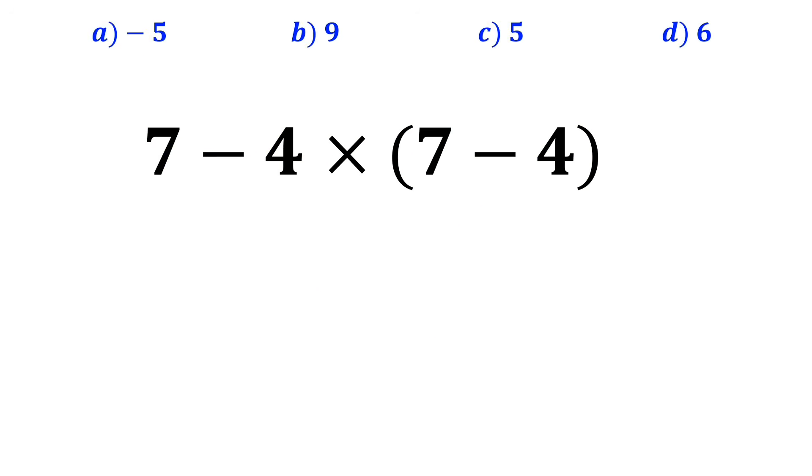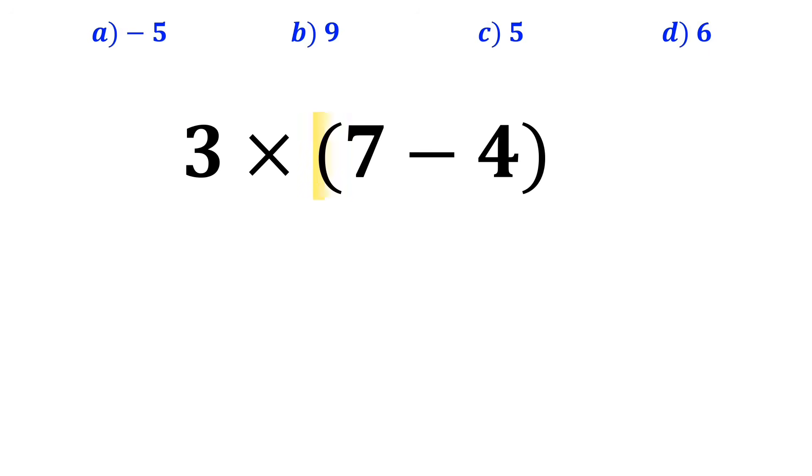In the first step, most people subtract 7 - 4 that I have highlighted in yellow. So it becomes 3 × (7 - 4). In the next step, they calculate 7 - 4 inside the parenthesis, which becomes 3 × 3.